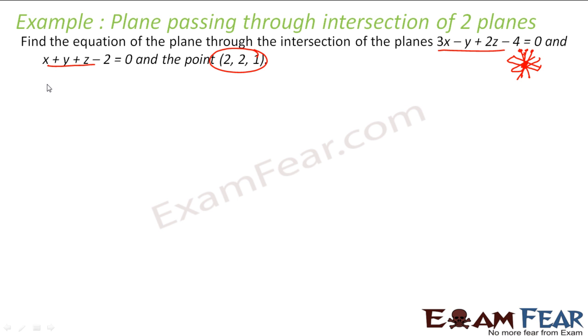So what we can do is: here I have p1, this is p2, and I have this point vector a. The equation of the plane passing through p1 and p2 is nothing but you add this and this with the lambda. That is: 3x minus y plus 2z minus 4 plus lambda into (x plus y plus z minus 2). This is a general equation of plane that passes through both of these.